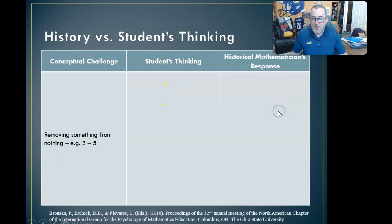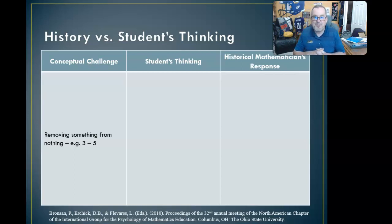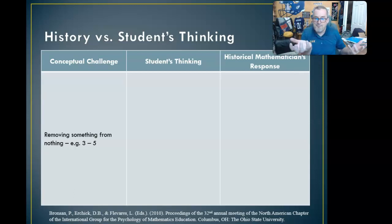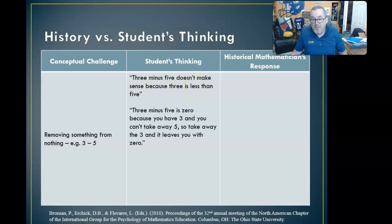First of all, the conceptual challenge is this. Negative numbers maybe first arise when students have to take something from nothing. For example, 3 minus 5. Going back to our idea of subtraction as takeaway — a pretty firmly rooted understanding for kids. So if you have 3 something and you take away 5, how does that make sense to a kid? A kid says in this study: '3 minus 5 doesn't even make sense because 3 is less than 5. How do you take 5 away from 3?'